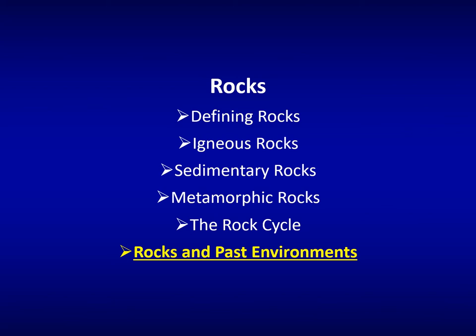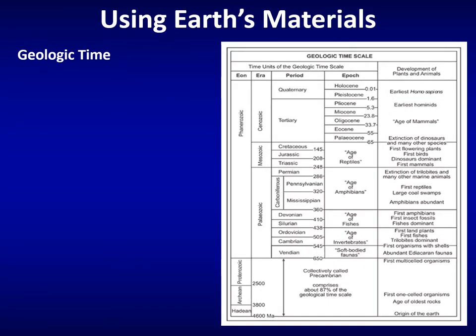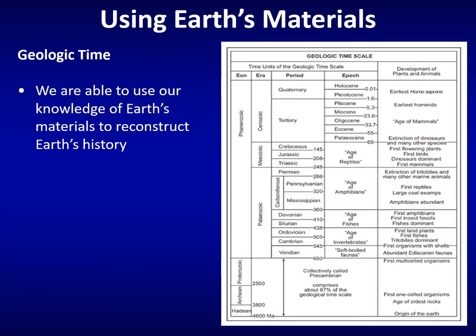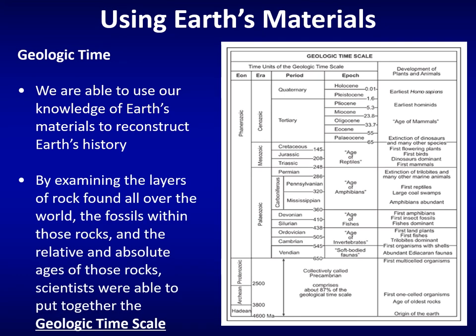Rocks can be used to give us information about past environments. By examining rock layers found around the world, the fossils within them, and the ages of those rocks, scientists can reconstruct Earth's general history from the oldest rock layers to the most recent — compiling this into a geologic time scale. In subsequent lectures, we'll learn exactly how to read rocks to determine Earth's history and build a picture of a region's past.